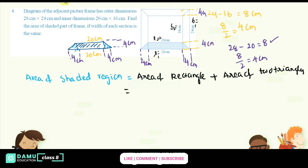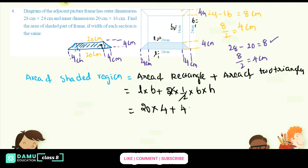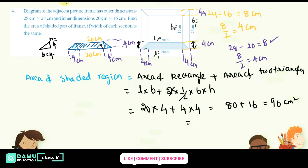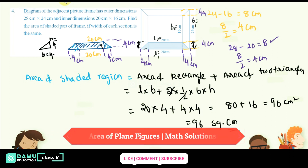Area of rectangle is length into breadth plus area of 2 triangles equals 2 into half into base into height. Length is 20 cm, breadth is 4 cm, base is 4 cm and height is 4 cm. So: 20 into 4 plus 2 into half into 4 into 4 equals 80 plus 16 equals 96 cm squared.